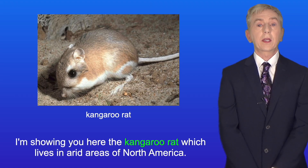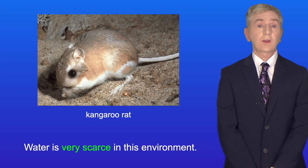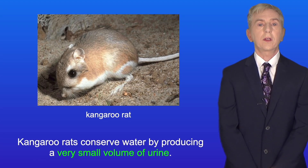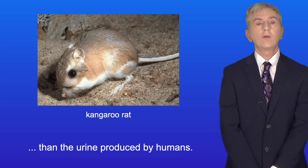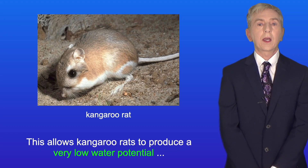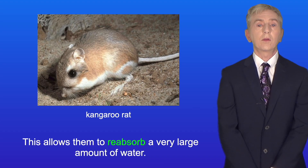I'm showing you here the kangaroo rat, which lives in arid areas of North America. Water is very scarce in this environment, so kangaroo rats conserve water by producing a very small volume of urine. The urine produced by kangaroo rats is around 20 times more concentrated than the urine produced by humans. The loops of Henle in kangaroo rats are extremely long, which allows them to produce a very low water potential in the medulla of their kidneys, and this allows them to reabsorb a very large amount of water.